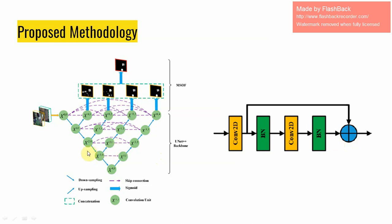Another major difference is the multi-level full resolution feature map generating strategy. In UNet architecture, only a single level feature map is generated through one pathway. While in UNet++, another three full resolution feature maps are also obtained through additional pathways. Thus, the strength of all four full resolution feature maps can be combined, which is beneficial for later stages.